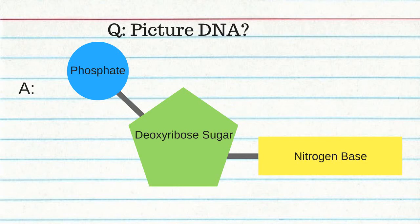What is DNA made of? Deoxyribose sugar, phosphate group, and nitrogen base. The possible bases of DNA are: adenine, thymine, guanine, and cytosine.